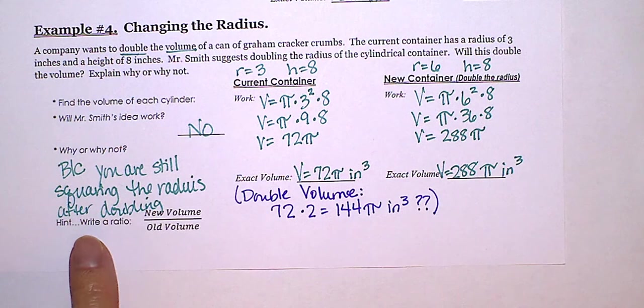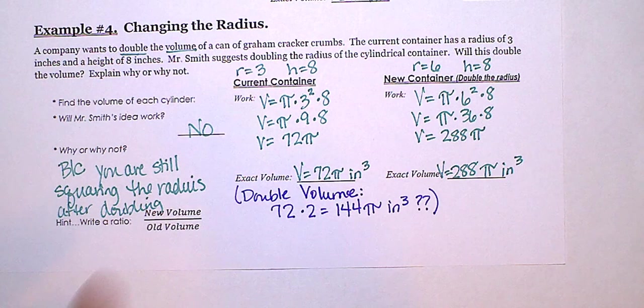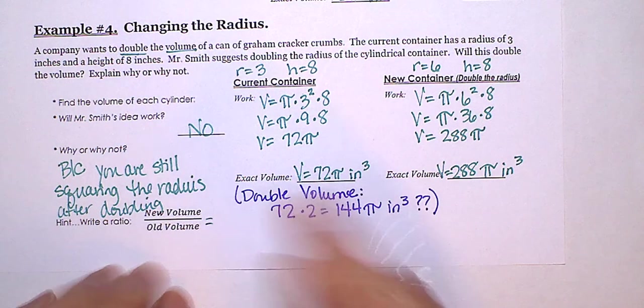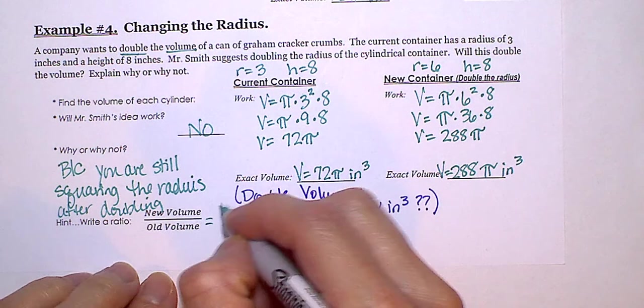Now, we did volume, or ratios, last unit. So let's look at the new volume is 288.